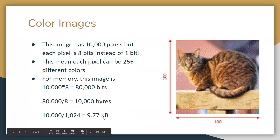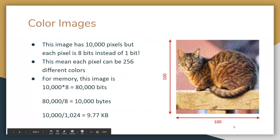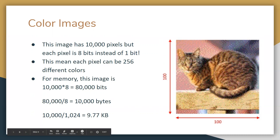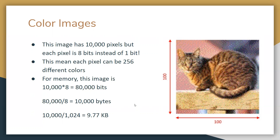We also do this with color images. This image is 100 by 100 pixels, but each pixel is going to have eight bits instead of one bit. So each pixel can be 256 different colors. When it comes to defining this in memory, this image takes up 10,000 pixels times eight bits, which is 80,000 bits — an 80,000-bit image. We can represent this in bytes by dividing by eight, so this is a 10,000-byte image.